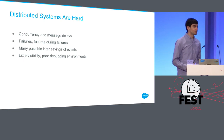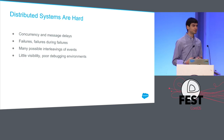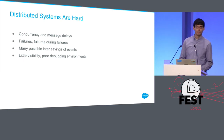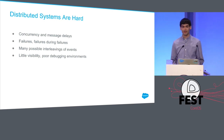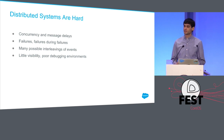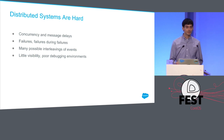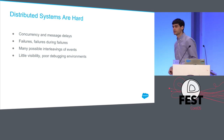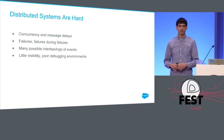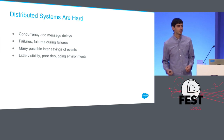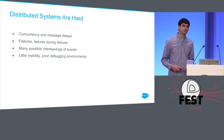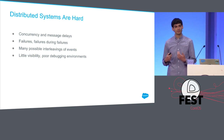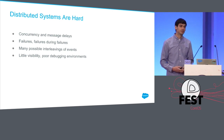Distributed systems are hard. I've been working on them for a few years now, and they tend to be hard to understand and hard to communicate about. Why is that? You've got these machines spread across a network, and they're all acting at the same time — so you've got this natural concurrency built in.